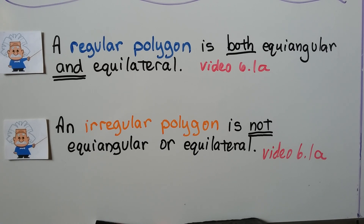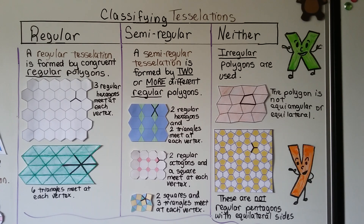A regular polygon is both equiangular and equilateral, as learned in video 6.1a from chapter 6. An irregular polygon is not equiangular or equilateral. This is very important because it helps us classify tessellations into three groups: regular, semi-regular, or neither.